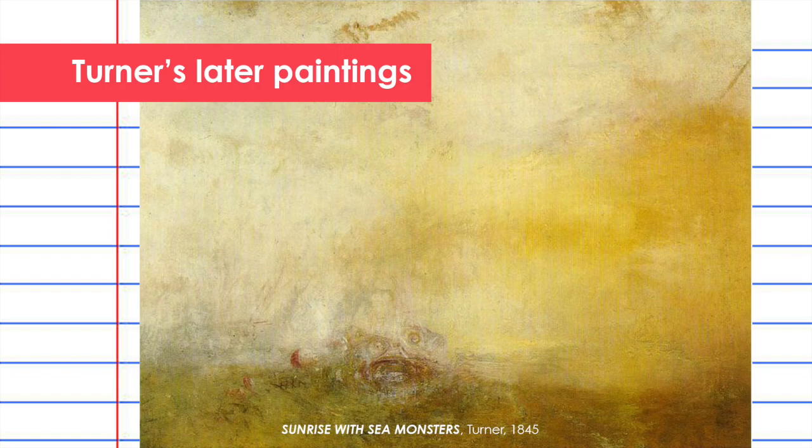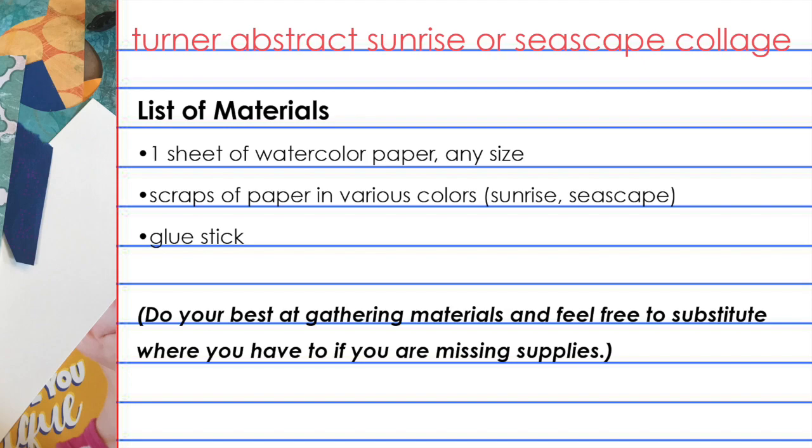It is called Sunrise with Sea Monsters from 1845. Do you notice Turner's bold use of yellow color and dramatic contrast against the rest of the pale white background? The tangible, obvious brushstrokes create great movement in the piece as well. The theme in this painting is pretty exciting — can you find the sea monster?